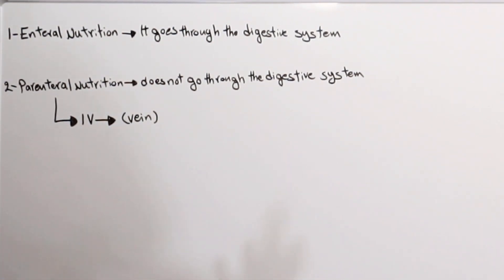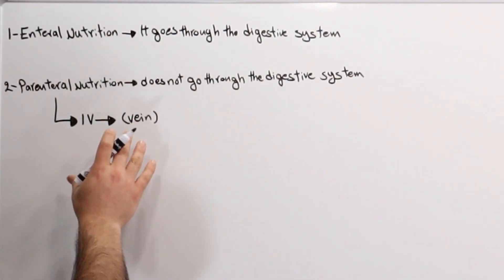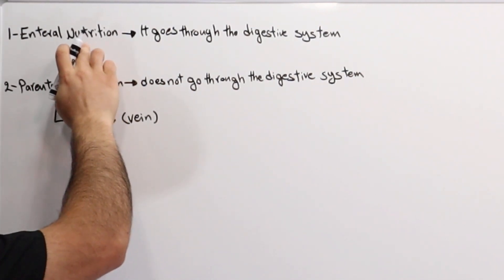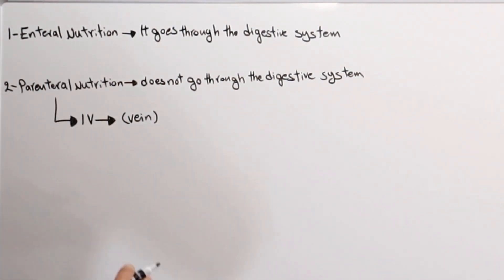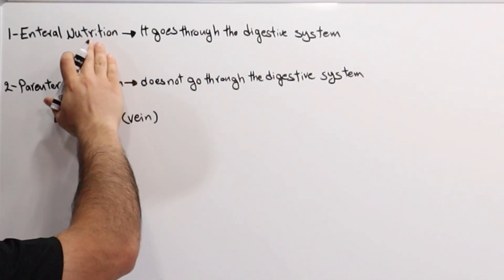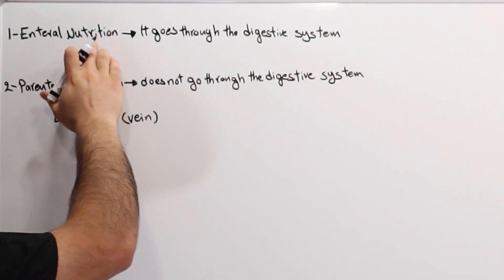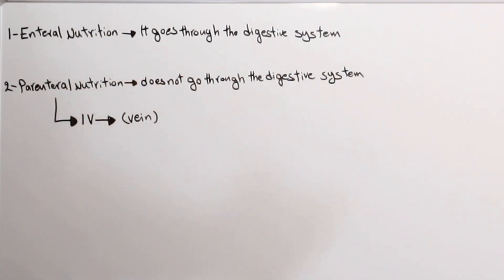We always want to move from the parenteral route to the enteral route, and from the enteral route all the way to the oral route. The reason for that is because we want to utilize the GI system. We do not want to keep the GI system unused, because complications can arise if it is left unused for a longer period of time.